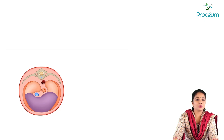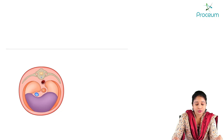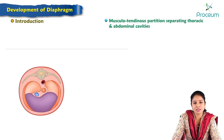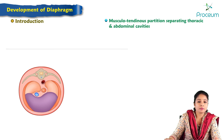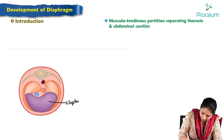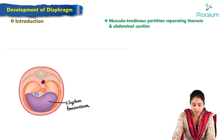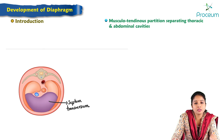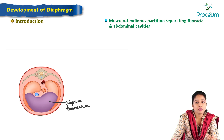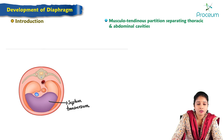Welcome back to the systemic embryology sessions. Today's topic is the development of the diaphragm. The diaphragm is a musculotendinous partition which separates the thoracic and abdominal cavities. The diaphragm develops from four sources: septum transversum, shown in purple, which is a muscular component supplied by cervical myotomes C3 to C5; pleuroperitoneal membranes; dorsal mesentery of the esophagus; and muscular ingrowth from the lateral body walls.